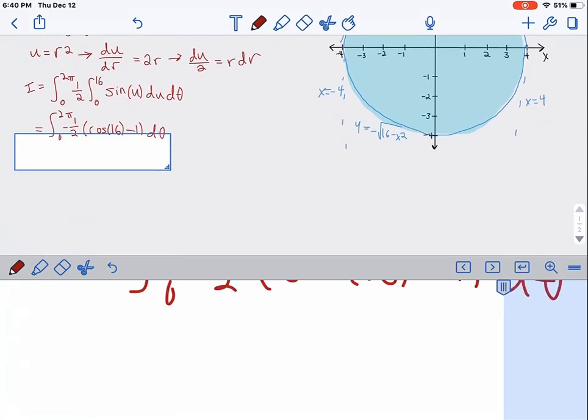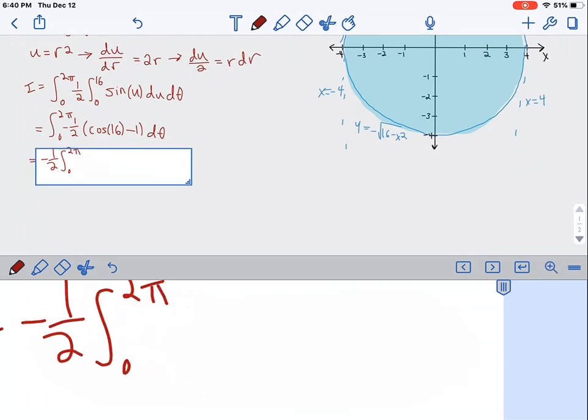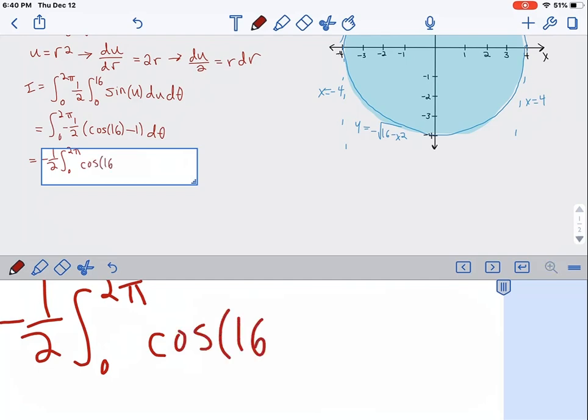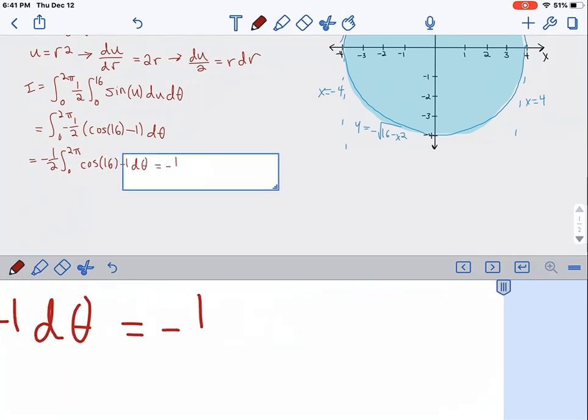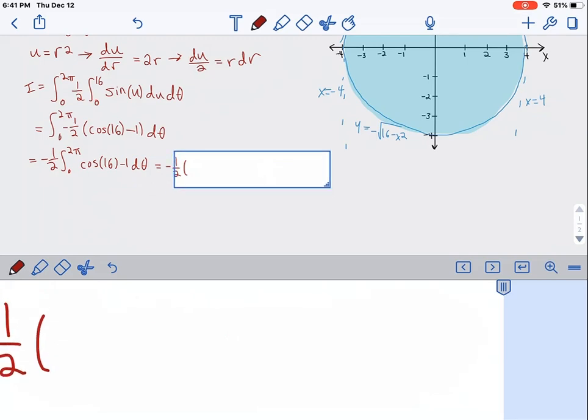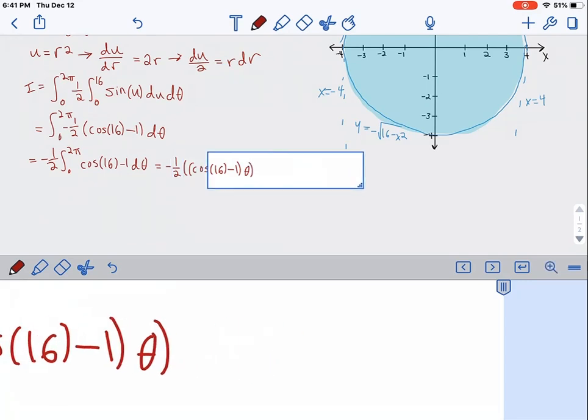Now we can factor out the negative 1 half. This becomes negative 1 half times the integral from 0 to 2 pi of cosine of 16 minus 1 d theta. Since these are just constants, it's the whole thing times theta, so cosine of 16 minus 1 all times theta, evaluated from 0 to 2 pi.